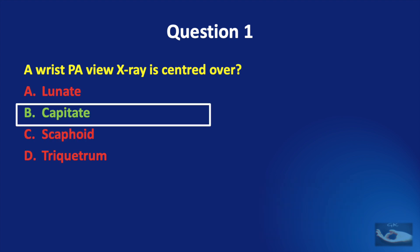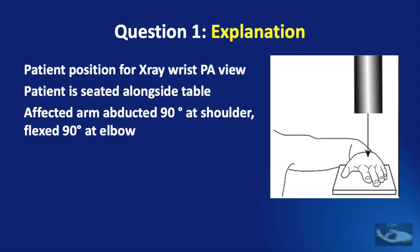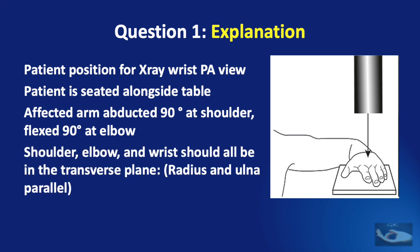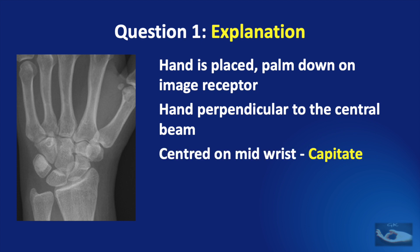The correct answer is the capitate. The exact positioning for a wrist PA view X-ray is as follows: the patient is seated alongside the table, the affected arm is abducted to 90 degrees at the shoulder and flexed at 90 degrees at the elbow, the forearm is completely pronated so that the shoulder, elbow, and wrist are all in the same transverse plane, making the radius and ulna parallel. The hand is placed palm down on the image receptor, perpendicular to the central beam, which is centered on the mid-wrist — that is, the capitate bone.